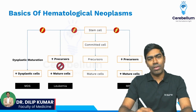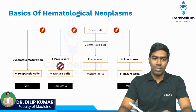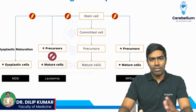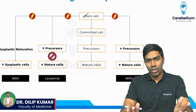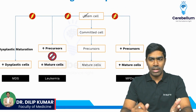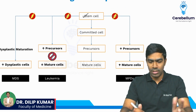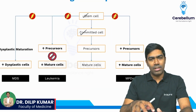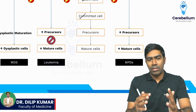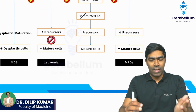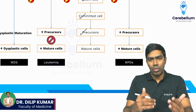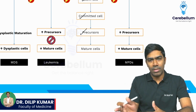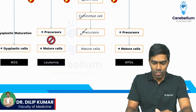Let us talk about the basics of hematological neoplasms. In the bone marrow we have a pluripotent hematopoietic stem cell that gets committed into a particular lineage, like a myeloid lineage or a lymphoid lineage. We call that a committed stem cell, and with the help of certain factors — for example, growth factors — they proceed with one particular lineage like RBCs, WBCs, or platelets.